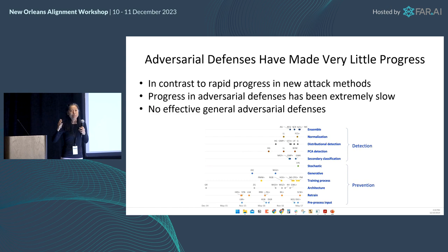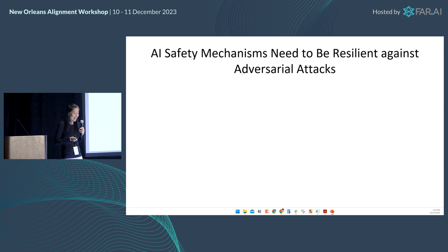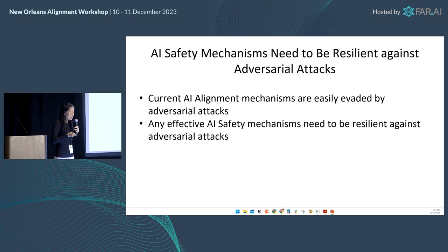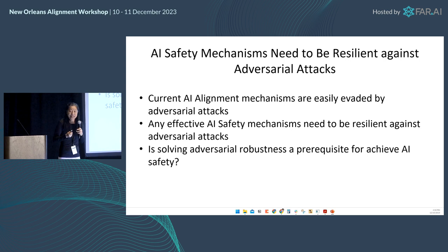However, for adversarial defenses, the progress has been extremely slow. We really don't have effective general adversarial defenses today. Hence, for AI safety, it's really important for AI safety mechanisms to be designed to be resilient against adversarial attacks. This poses a significant challenge for AI safety.